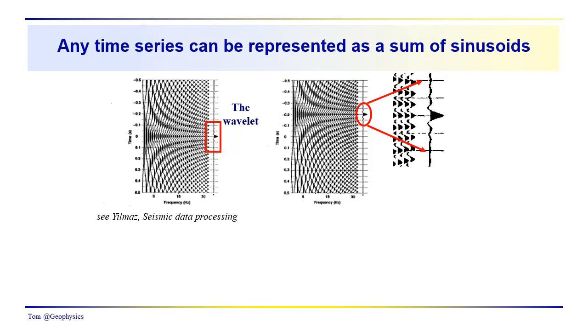So these two figures come from Yilmaz's text, Seismic Data Processing. This is a Society of Exploration Geophysicists publication. In much more detail here with a lot more frequency components. So frequency would be down here, we're going from around zero up to over 30 hertz.